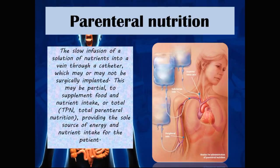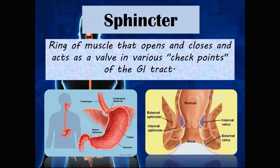A sphincter is a ring of muscle that opens and closes, acting as a valve at various checkpoints of the GI tract. Examples include the esophageal sphincter, which controls the inflow of food from the esophagus into the stomach; the pyloric sphincter, which controls the exit of food from the stomach into the duodenum; and the external and internal anal sphincters, which allow for the passage of feces out of the body.